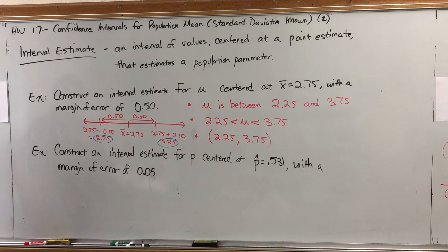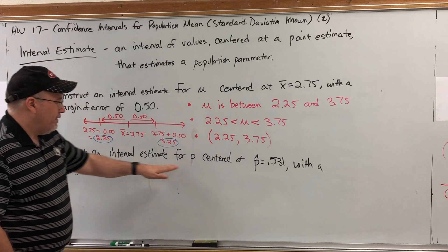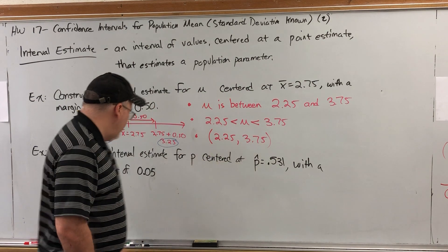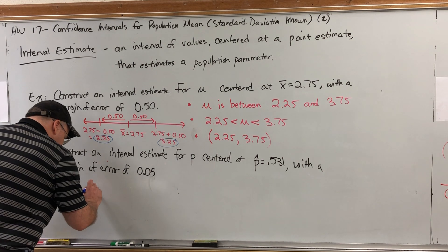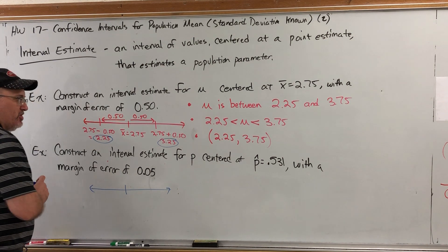We can do the same thing for p-hats. For example, let's construct an interval estimate for p centered at p hat equals 0.531 with a margin of error of 0.05. The trick is understanding the role of the margin of error.